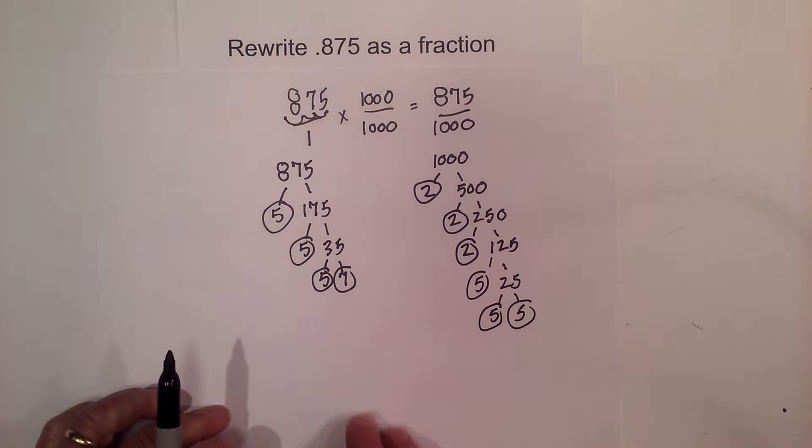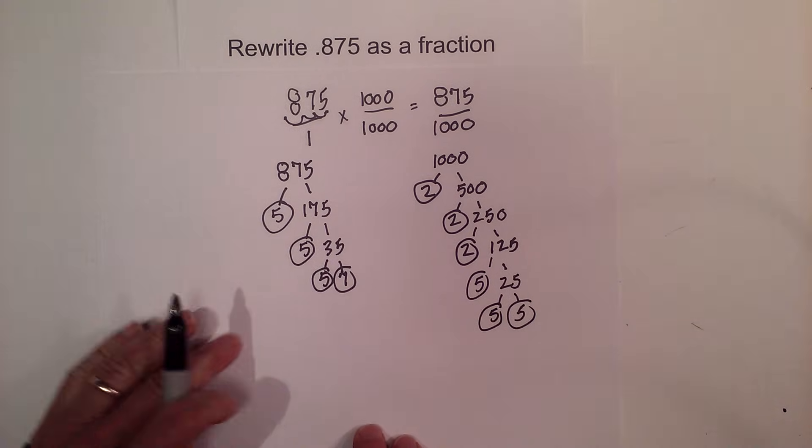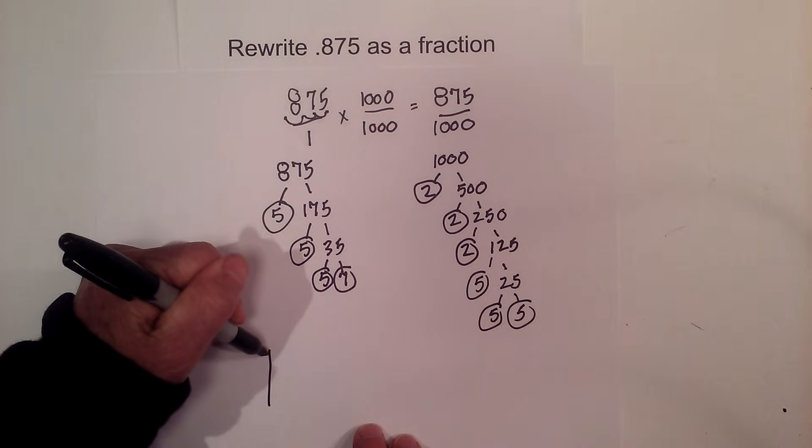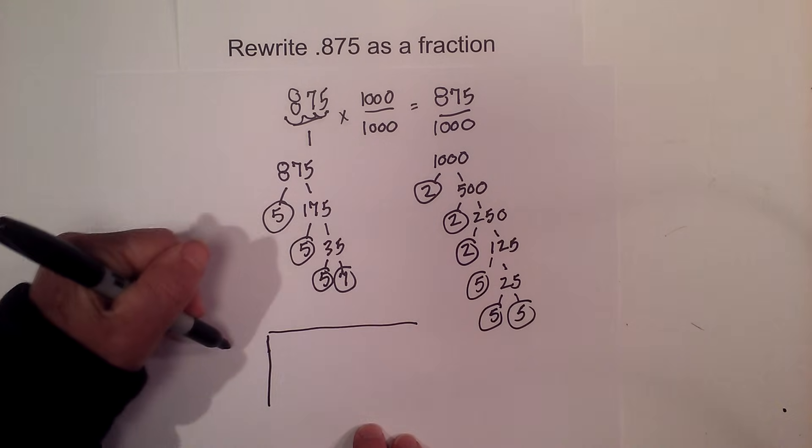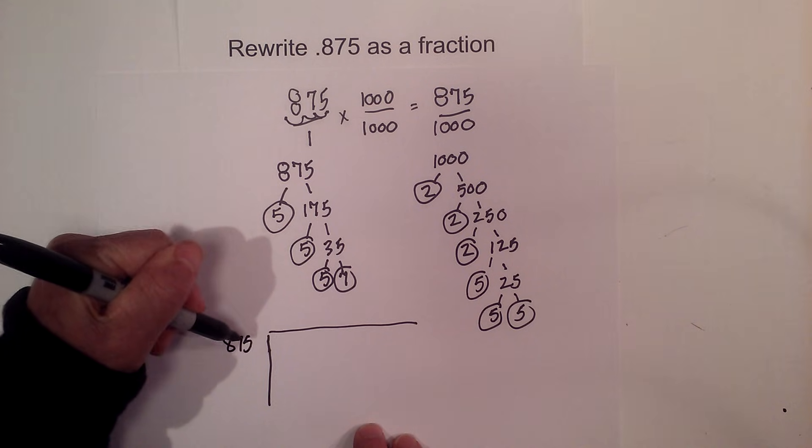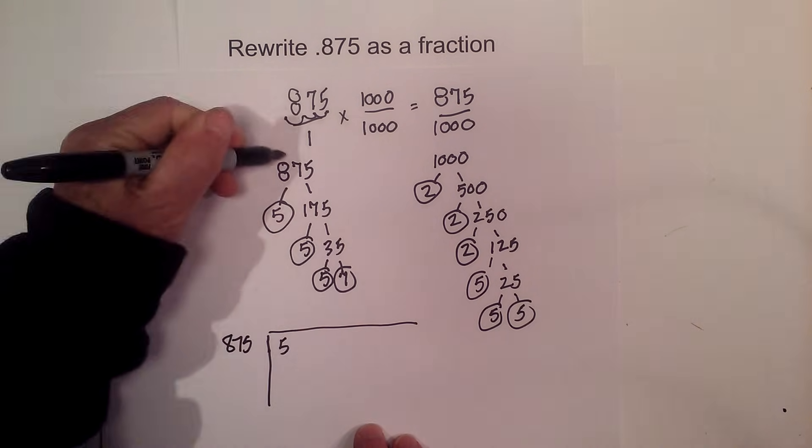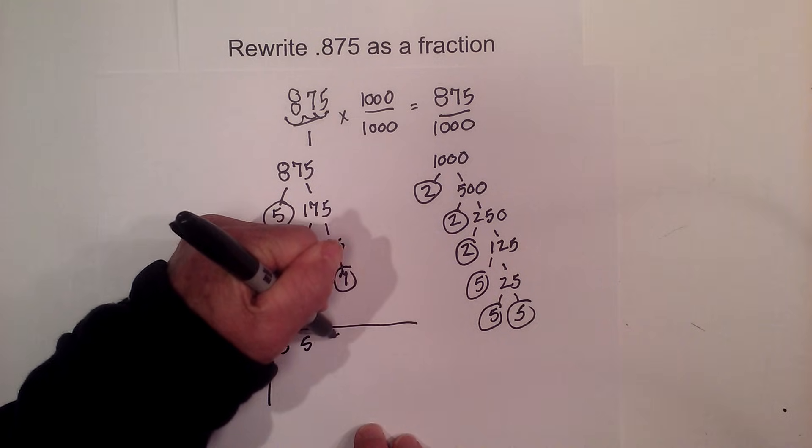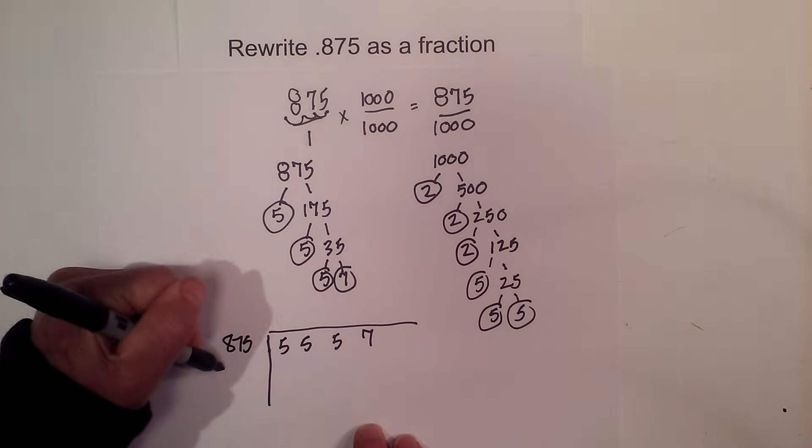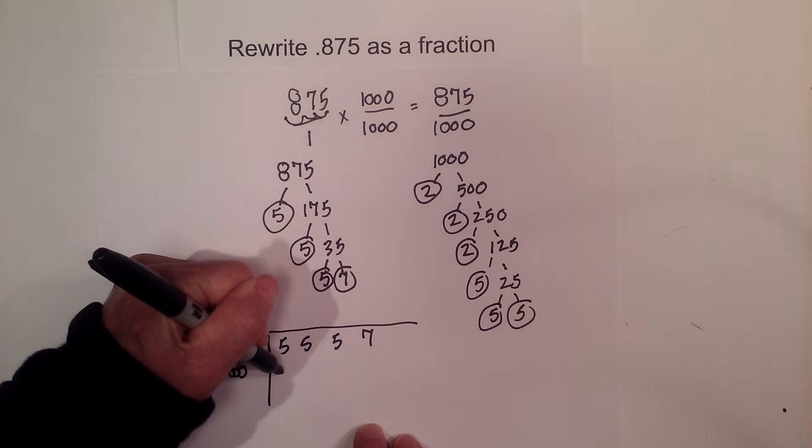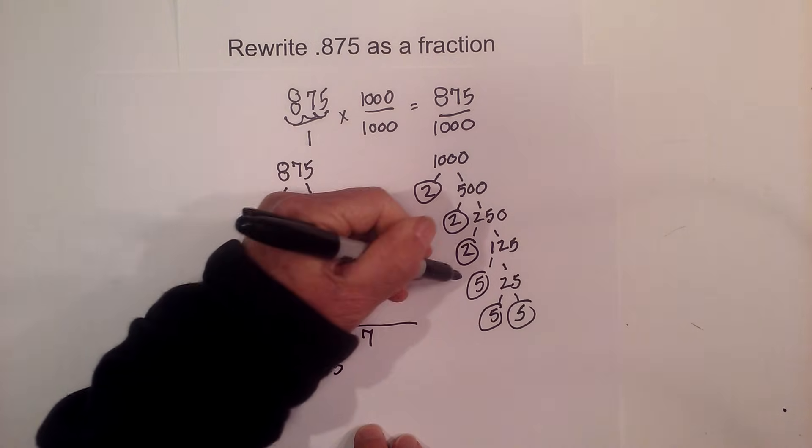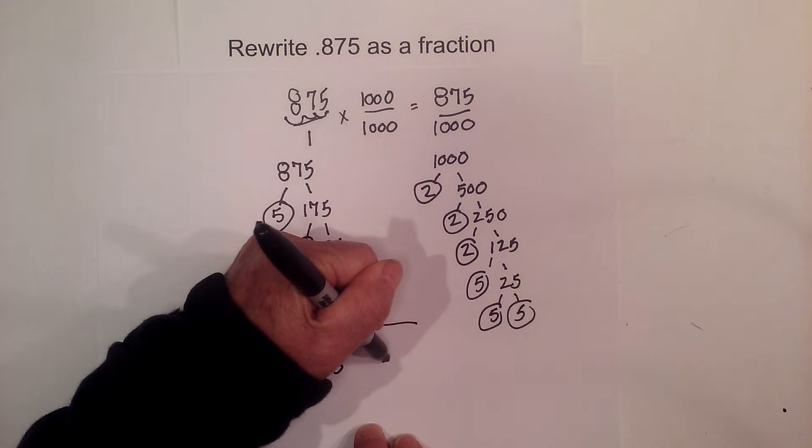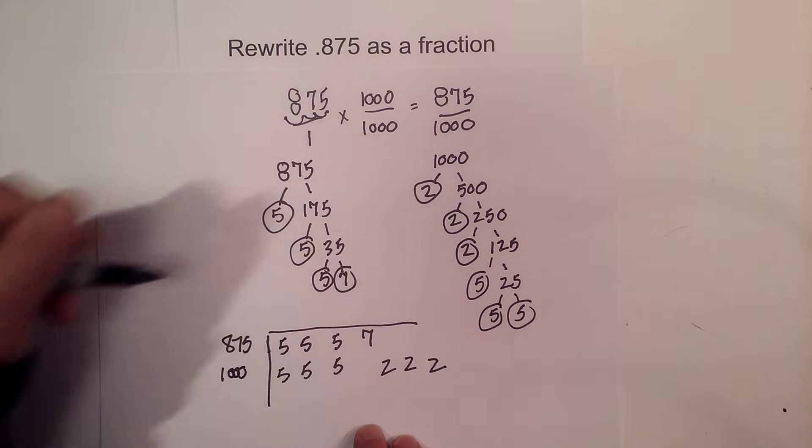A lot of 5s here. Now to stay organized, I'll create a little chart. Remember, I'm still working on getting the greatest common factor. Rewrite the prime numbers. For 875, I have 5, 5, 5, and 7. And for 1,000, I'm going to start with the 5s: 5, 5, 5, and then three 2s. I'm going to skip the 7.